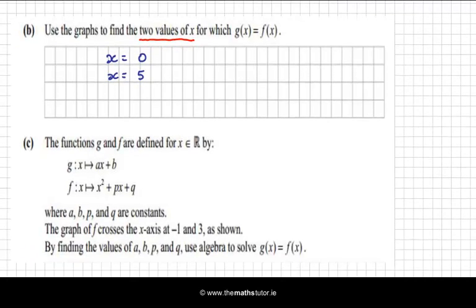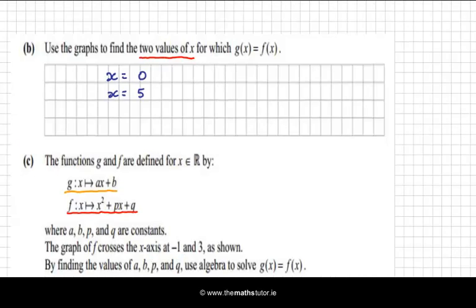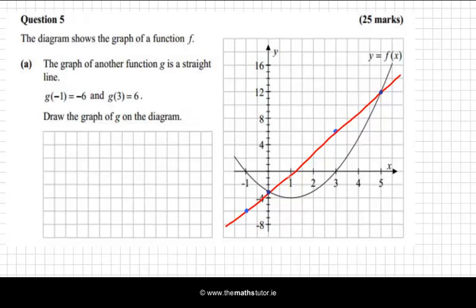Finally, the functions g and f are defined for x as an element of the reals by g(x) = ax + b. This is just a typical linear equation with a coefficient of x and a constant. f(x), on the other hand, is a typical quadratic equation: x² + px + q. The coefficient of x² is 1, and we have px and q. So a, b, p, and q are all constants. We're told that the graph of f crosses the x-axis at -1 and 3, as shown.